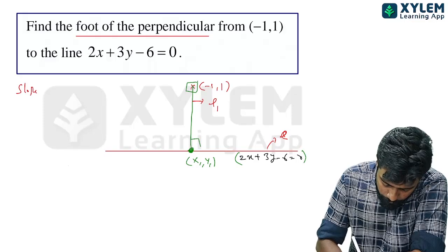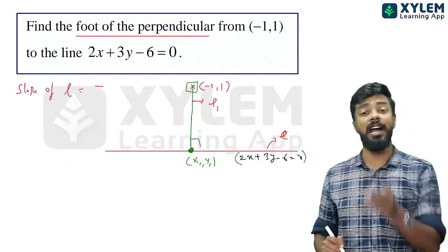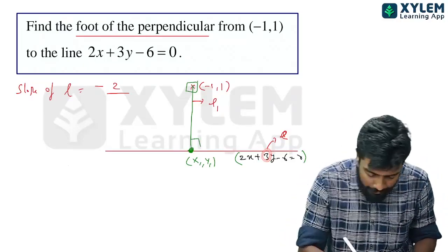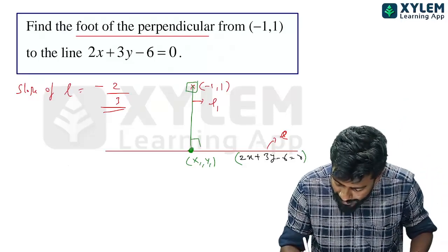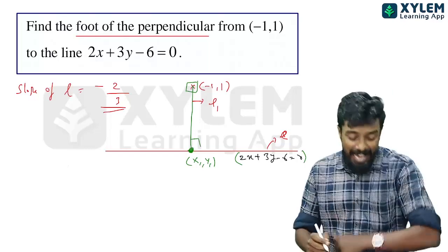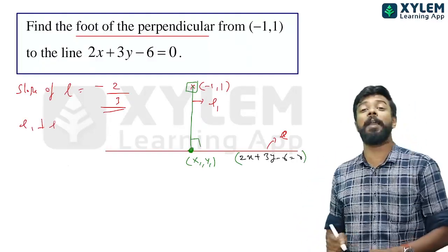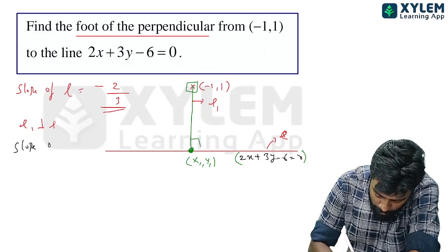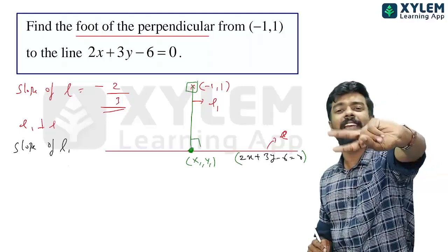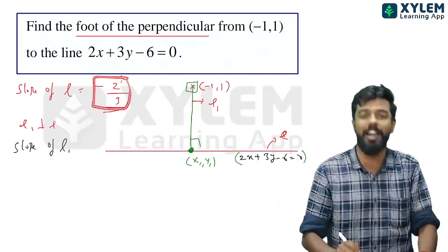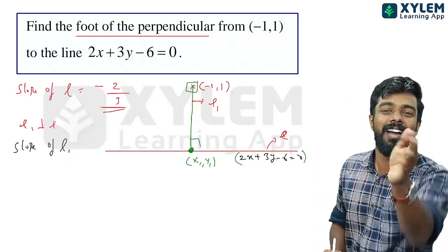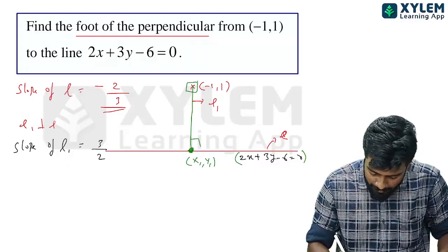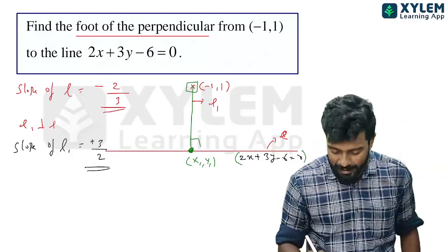The slope of line L is minus a by b. A is 2 and b is 3, so slope of L is minus 2 by 3. Since line L1 is perpendicular to L, the slope of L1 is the negative reciprocal, which is 3 by 2.